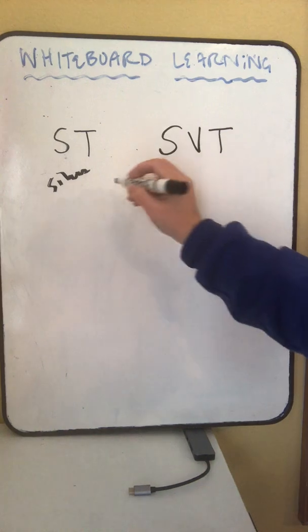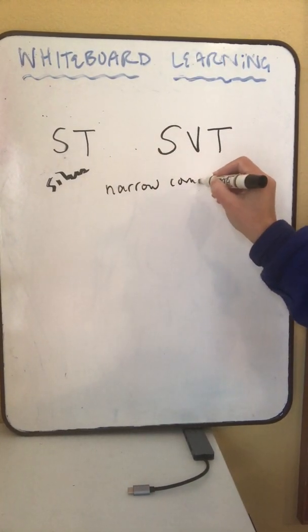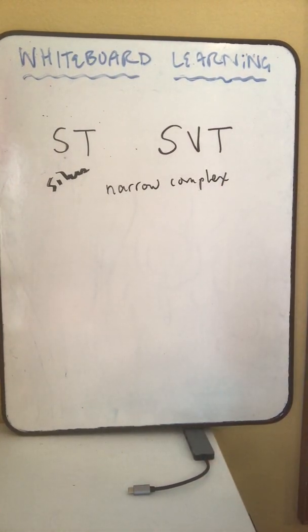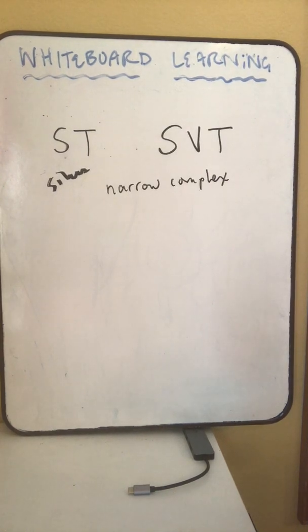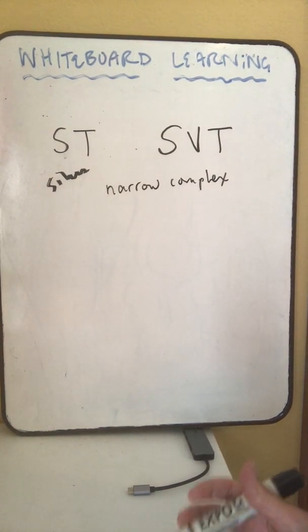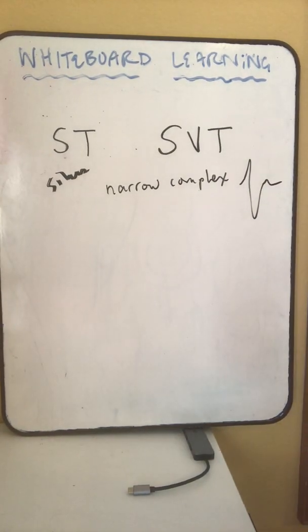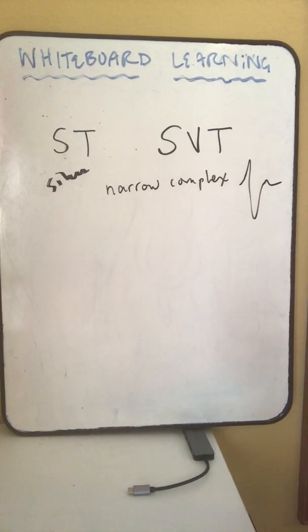First of all, these are what we call narrow complex tachycardias, both of them. If you have a wide complex, you probably don't have a supraventricular tachycardia, you may have a ventricular tachycardia. If it looks wide and bizarre, that would not be coming from the same place as a supraventricular tachycardia.